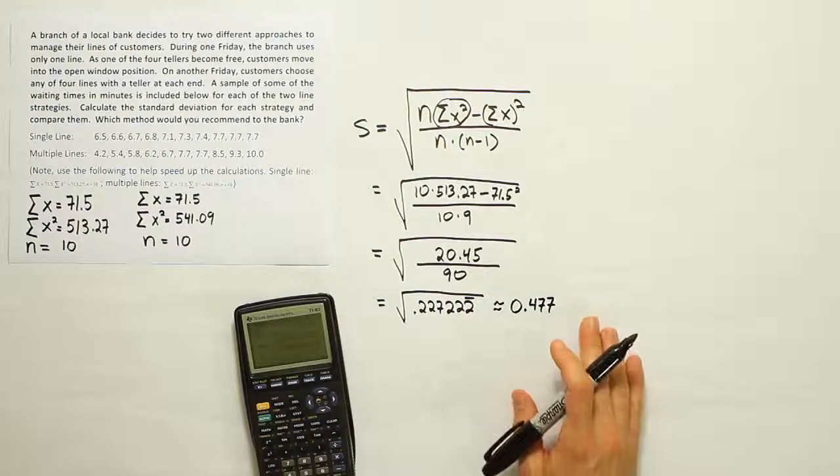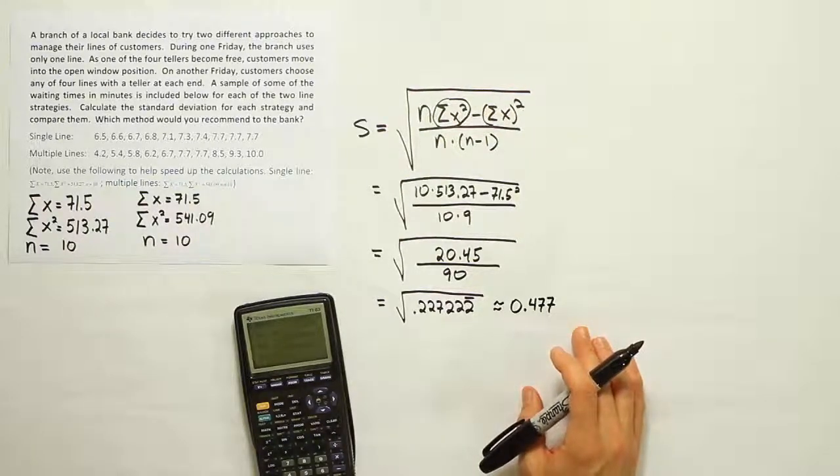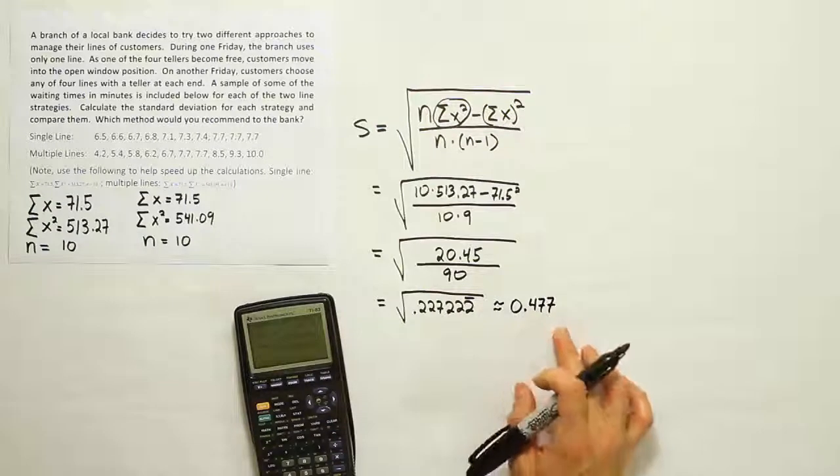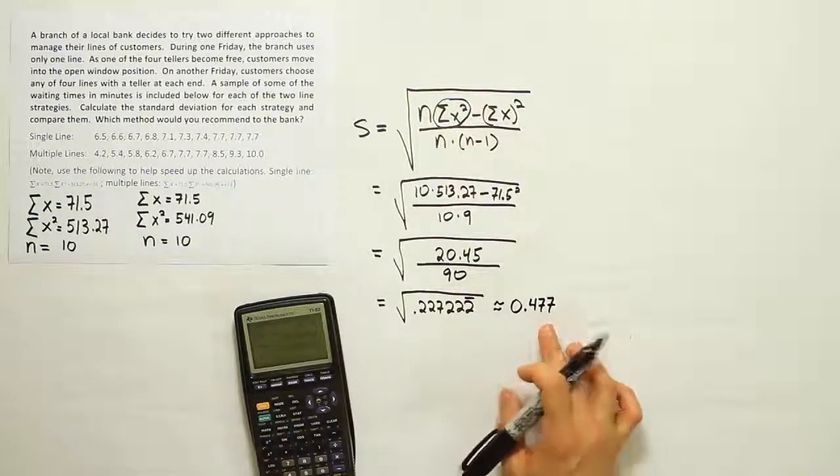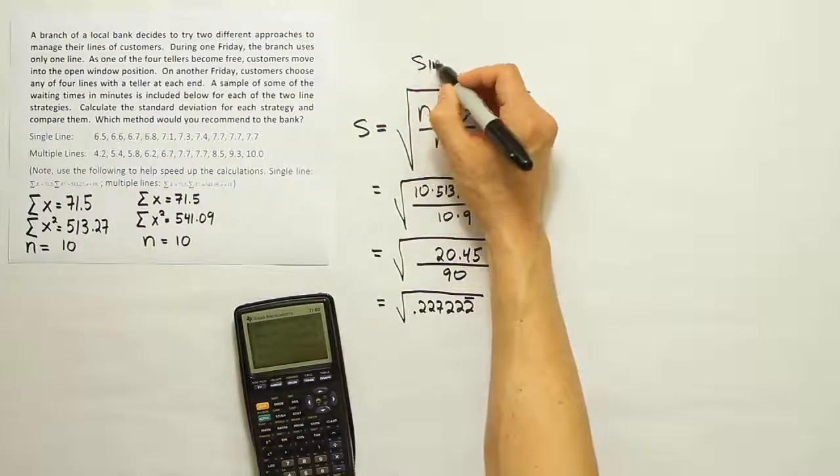and I end up with the answer of approximately 0.477. Okay, now, of course, this would be in minutes, since the data originally was listed in minutes, right? So this would be roughly around 0.47 or about half a minute. Okay, so let's do the calculation again for the multiple lines. This was the single line.